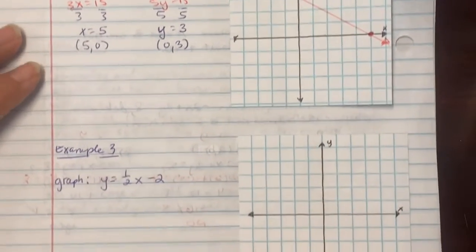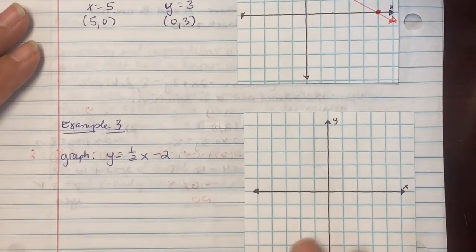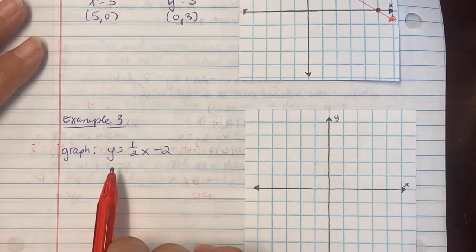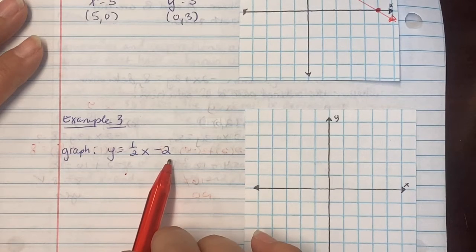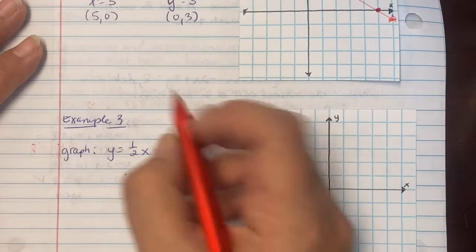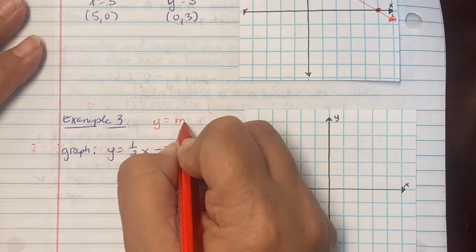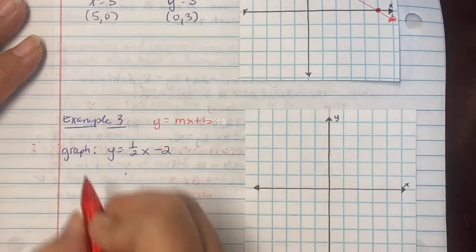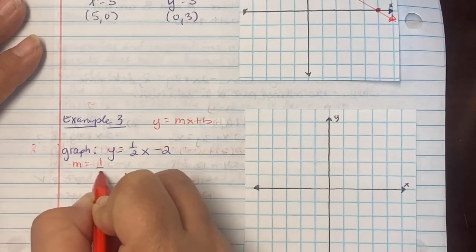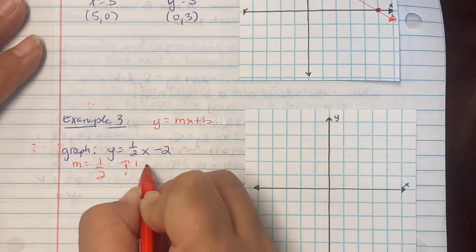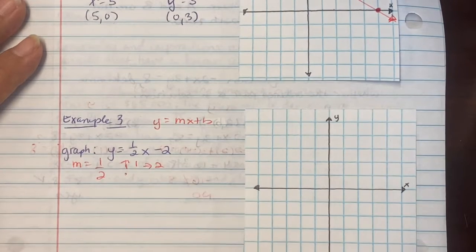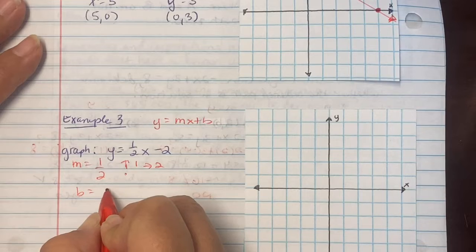On example 3, we're going to do the same thing. Only they gave your equation to you in y = 1/2x - 2, which means it's in y intercept mode, of y = mx + b. So we're going to identify our m. Our m is 1/2, which means you're going to rise 1 to the right 2.